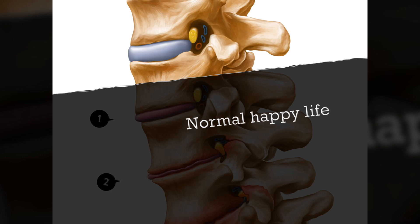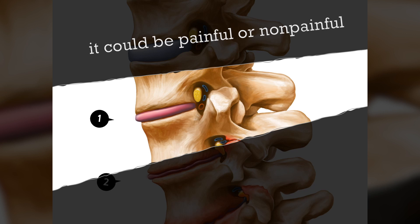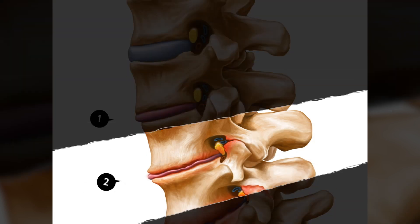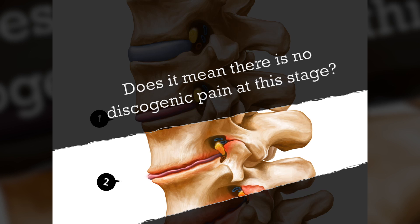This illustration shows a normal healthy disc — no pain, no structural abnormalities. It becomes degenerated and narrows in height. This is a must-have process for most people, but it could be painful or non-painful. What makes it different? Eventually, all the disc material will be torn down, with marginal spur formation and facet joint hypertrophy. We cannot diagnose discogenic pain at this stage by traditional provocative discography. Does it mean there is no discogenic pain at this age?